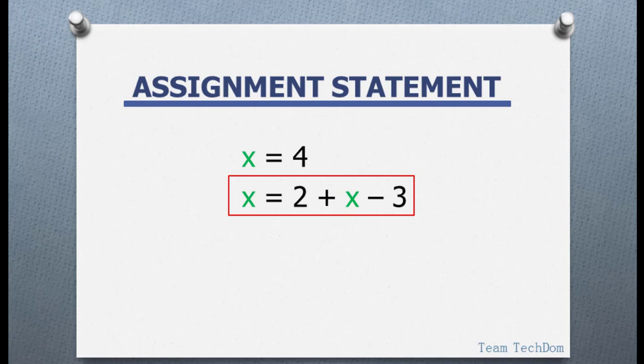Over here we have the initial value stored in x to be 4. Now in our expression Python is going to use 4 where it sees x. The result of the expression is going to be 3. Thus 2 plus 4 will give us 6 then once you subtract 3 from it we get 3. Now the value in the x variable will be updated to 3.